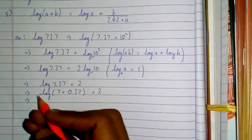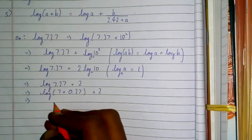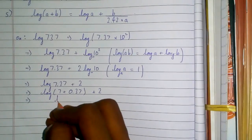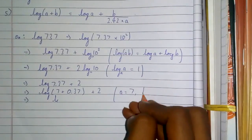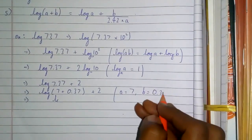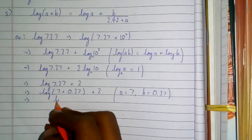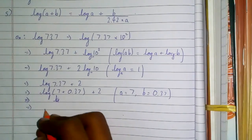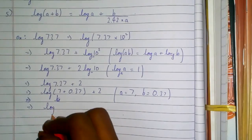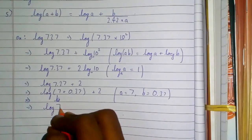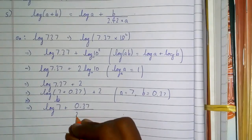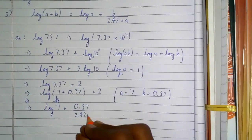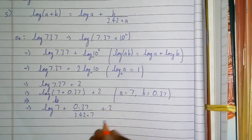Let's use the formula and write it in that form. Here a is 7 and b is 0.37. So we write log 7 + 0.37/(2.42×7), and this 2 will come here.